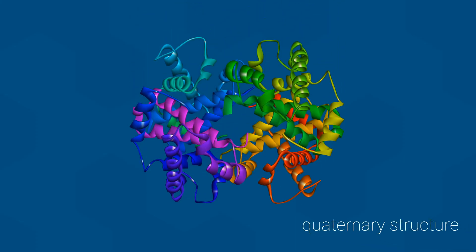This final level of protein structure is known as the quaternary structure. For this, let me use the protein shown here as an example, hemoglobin.